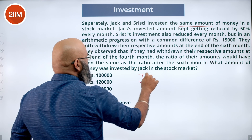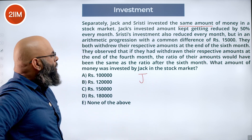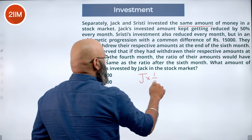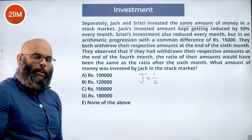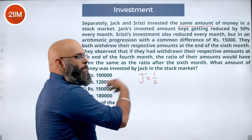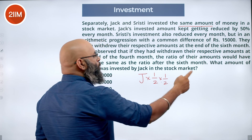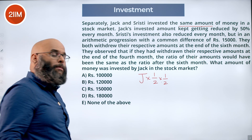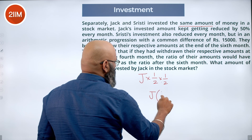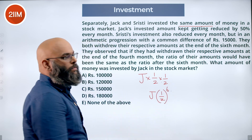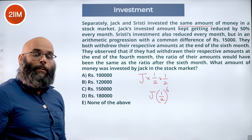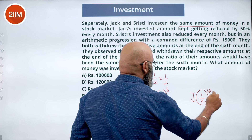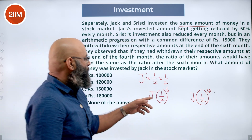Let's say Jack invested an amount J. Every month that gets reduced by half — multiplied by one-half. After one month it's J×(1/2), after two months J×(1/2)², and so on for every successive month. After six months it would be J×(1/2)^6. If he had withdrawn after four months, that would have been J×(1/2)^4. These are Jack's investment values after six months and four months respectively.